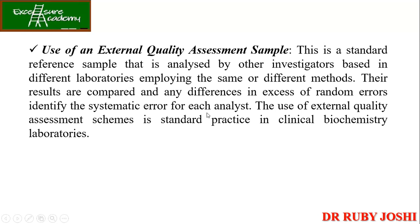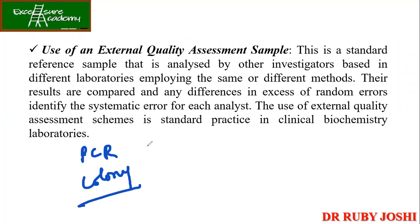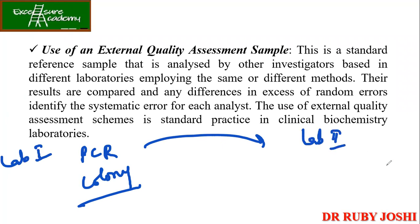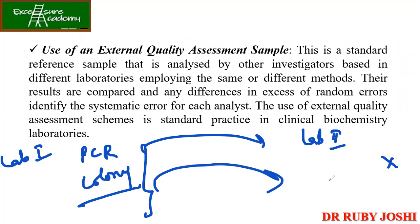The fourth means is use of an external quality assessment sample — a standard sample analyzed by investigators in different laboratories employing the same or different methods. For example, if a PCR colony protocol is not working, you take the method from another lab that has a fixed protocol and follow it in your lab, using the same machines and reagents. This is how you can reduce systematic errors through external quality assessment.